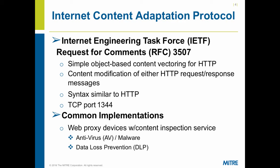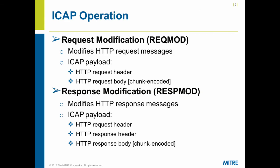The ICAP protocol was created back in 2003, RFC 3507. It's intended to modify HTTP messages — HTTP requests and HTTP responses. It operates over port 1344 and the syntax is very similar to HTTP. Common implementations include antivirus inspection of inbound traffic or data loss prevention inspection of outbound traffic. Those are the specific use cases for which the ICAP protocol is typically implemented.